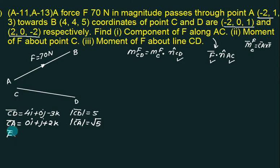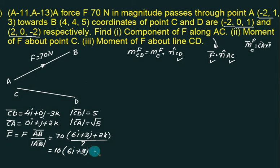F bar is F. Is it directed from A to B? So this one is AB bar upon mod of AB bar. F is 70. What is AB bar? AB bar is B minus A. 4 minus minus 2. 6i. 4 minus 1. 3j. 5 minus 2k. 2k. Upon under root of 6 square plus 3 square plus 2 square. So we will keep it as 10 into 6i plus 3j plus 2k. Even this is integer number will not multiply. Because if you multiply they will become larger number. It is difficult to remember the tables of larger number. All we can remember tables from 1 to 9 very easily.